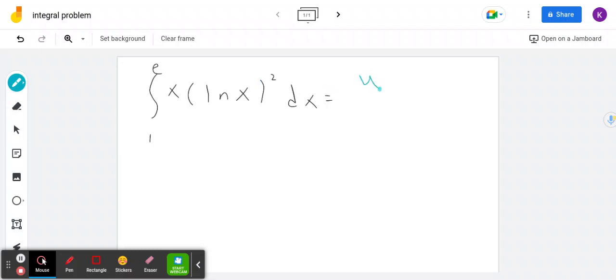So I'm going to start by using a u-substitution. We can let u be equal to natural log of x. And by differentiating, we know that du is equal to 1 over x dx.